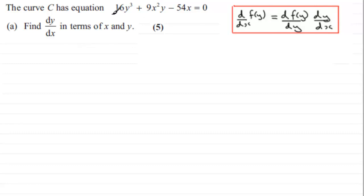Okay, so before we start, I'm just going to copy down the question. So we've got 16y³ + 9x²y - 54x = 0. And what I'm going to tell the reader is that I'm going to differentiate this with respect to x.